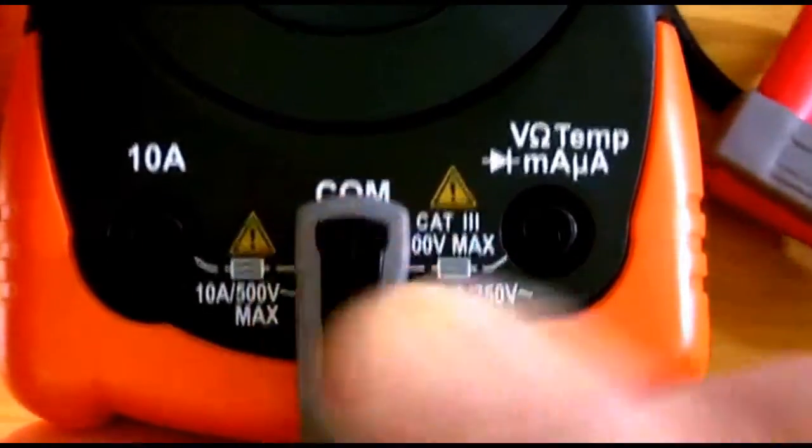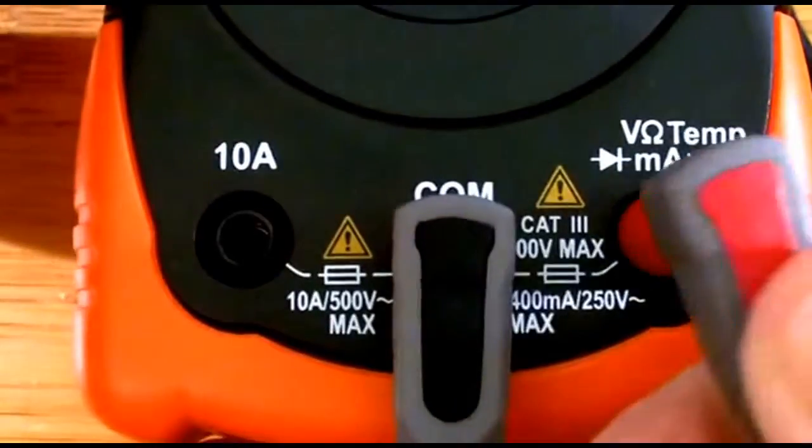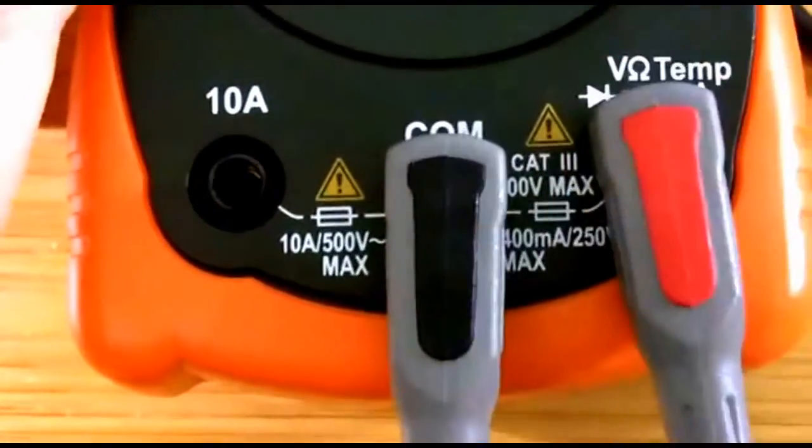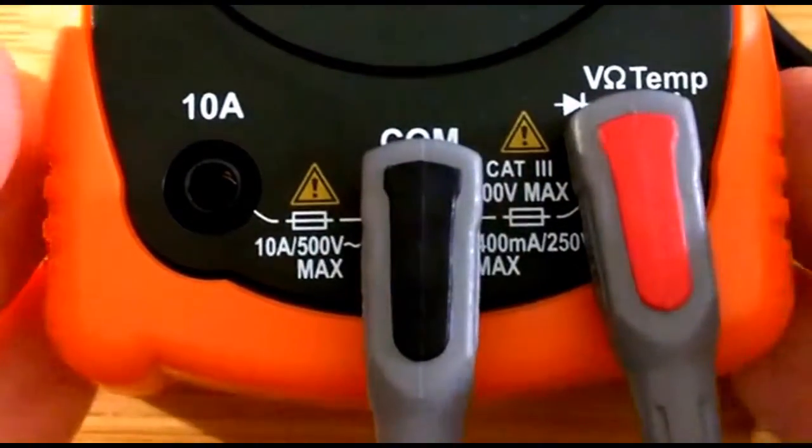The one to the left is used for testing amperes. Almost all your tests are going to be done for the one that's marked voltage and ohms or resistance.